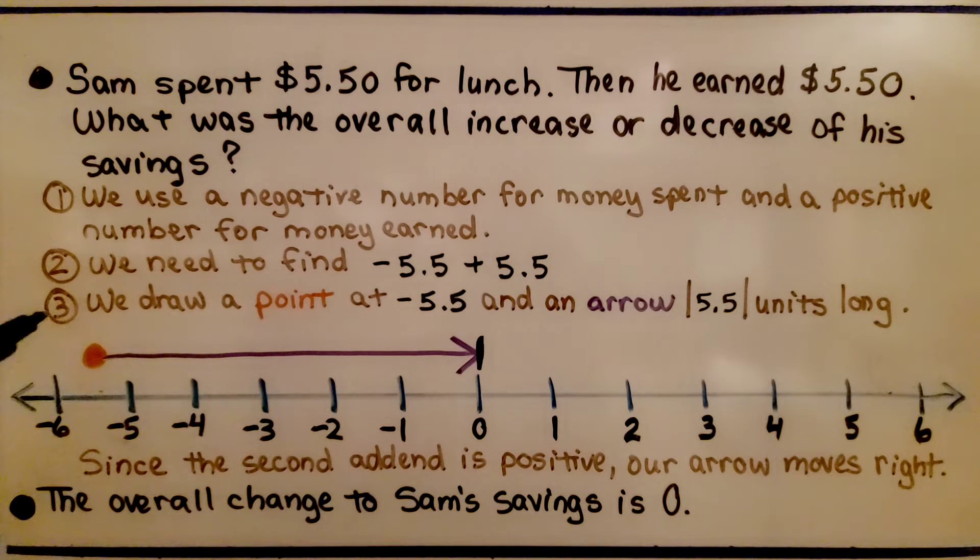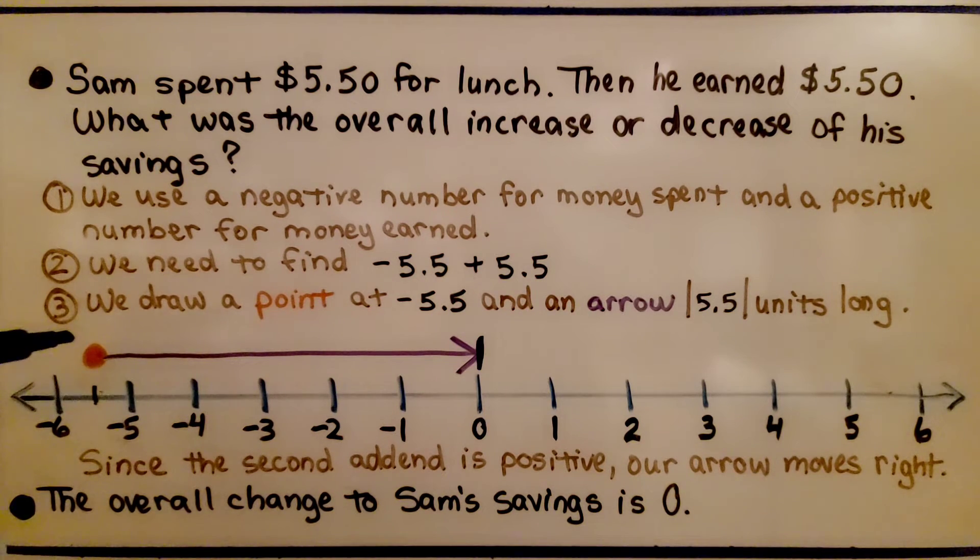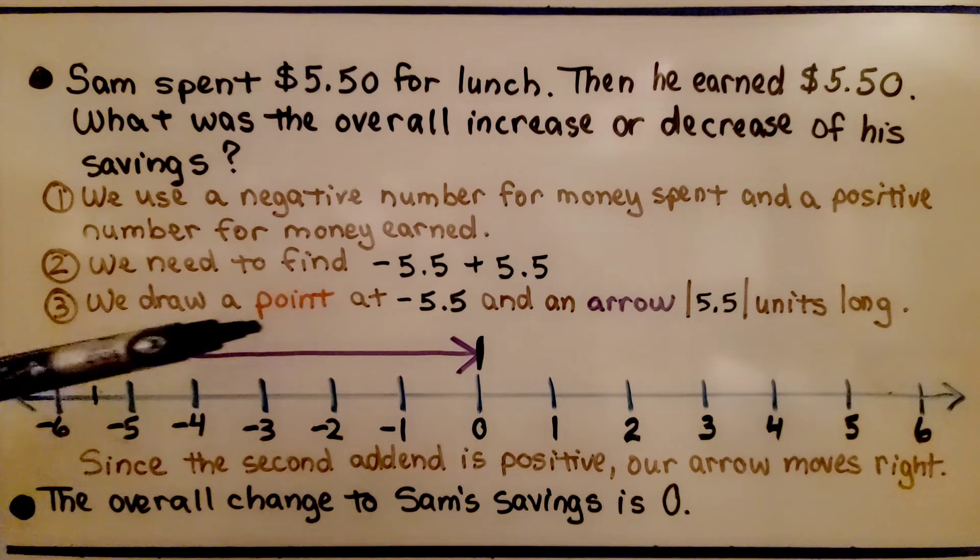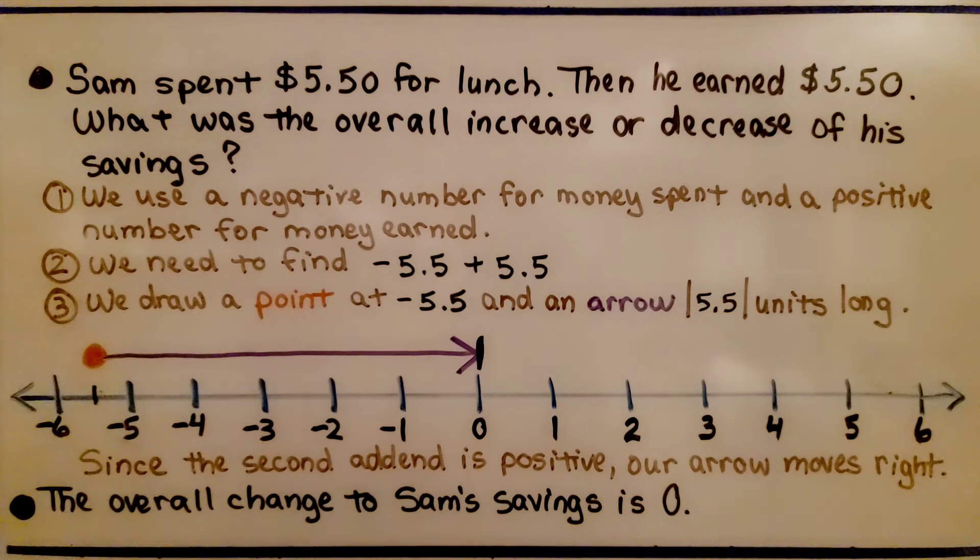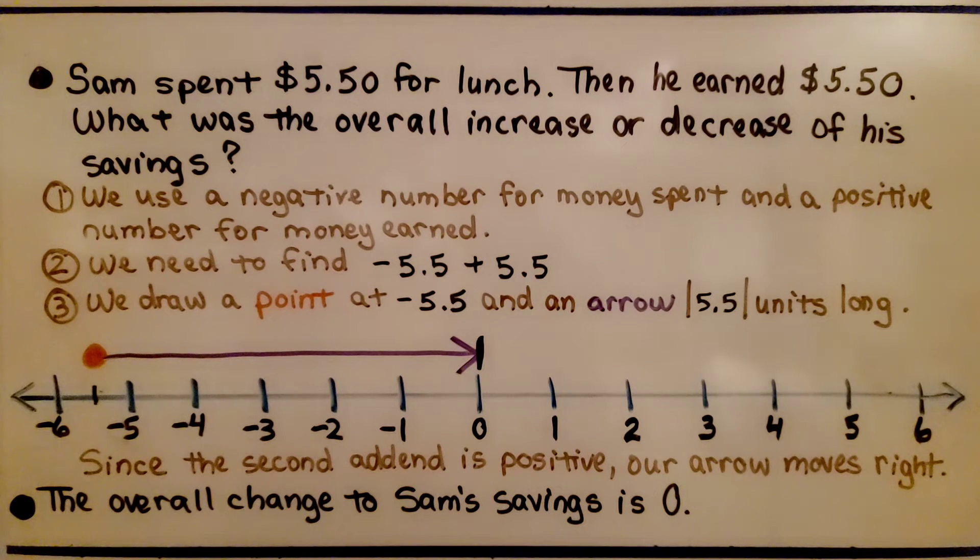We draw a point at negative 5.5. We know in between negative 5 and negative 6 would be 5 and a half. We draw an arrow 5.5 units long. It's going to put us at zero. Since the second addend is positive, our arrow moves right. The overall change to Sam's savings is zero.